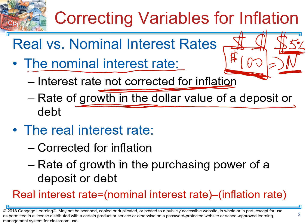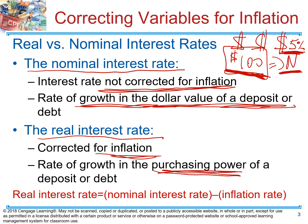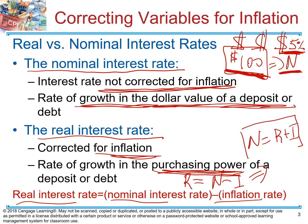The nominal interest rate shows you how fast the dollar amount on your account is growing. The real interest rate, on the other hand, is corrected for inflation and shows you the purchasing power of your account. The formula for real interest rate is: Real = Nominal − Inflation. Equivalently, Nominal = Real + Inflation. Please keep these two formulas in mind.